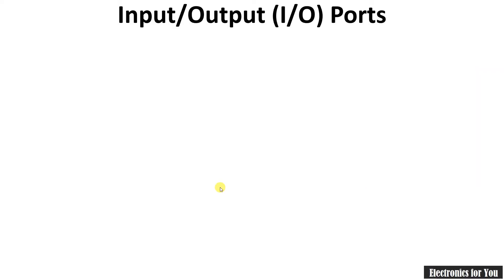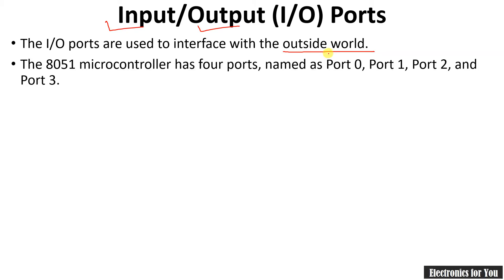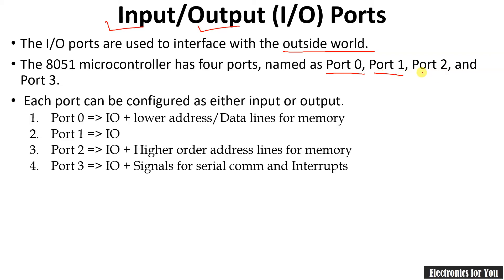The next block is the input/output ports. As the name indicates, these are used to interface with the outside world, because the microcontroller has to connect with other devices such as LEDs, keyboards, relays, sensors, etc. The 8051 microcontroller has four ports — port 0, port 1, port 2, and port 3 — each port is 8-bit. Each port can be configured as either input or output.